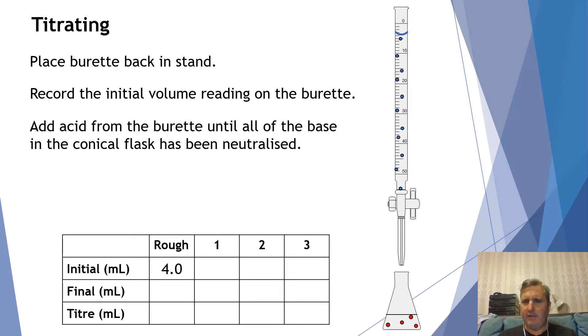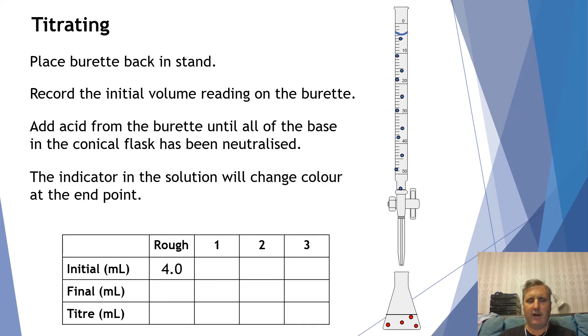I'm going to add the acid that's in here until I see a change in the colour of my indicator. When I see the change in the indicator, it means I've added exactly the right amount of acid to neutralise the base. We have a ratio of moles that are going to cancel out each other and we'll have neutralisation. At that point where it changes colour, that is called the end point.